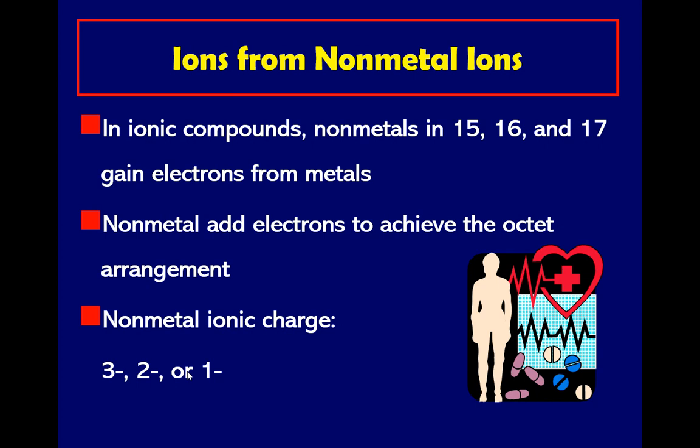Non-metals add electrons to achieve the octet arrangement. Metals lose electrons to become stable, while non-metals gain electrons to become stable. So the non-metal ionic charge can be negative 3, negative 2, and negative 1. We will continue in video number four.